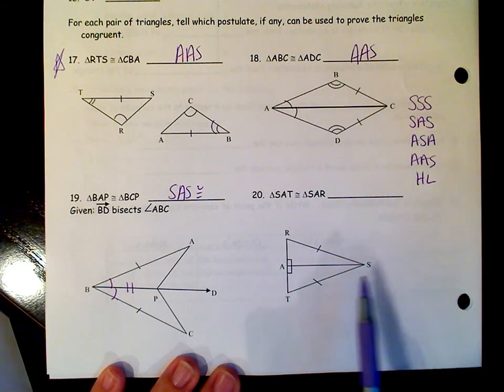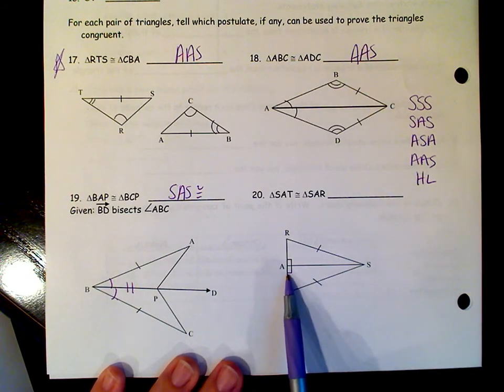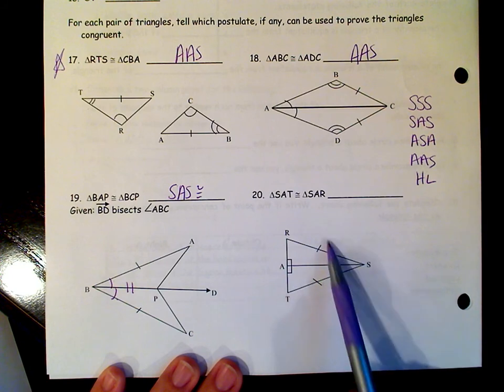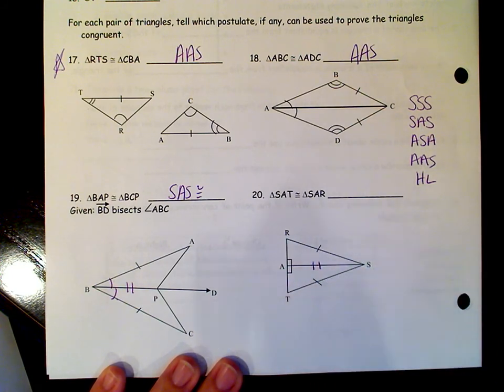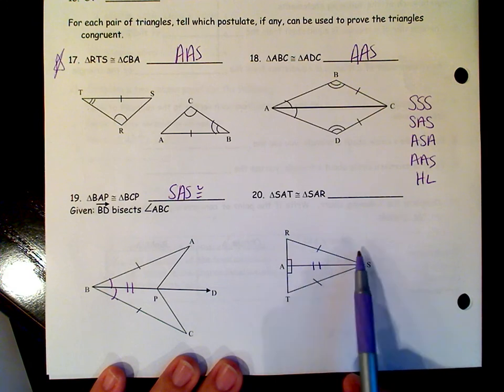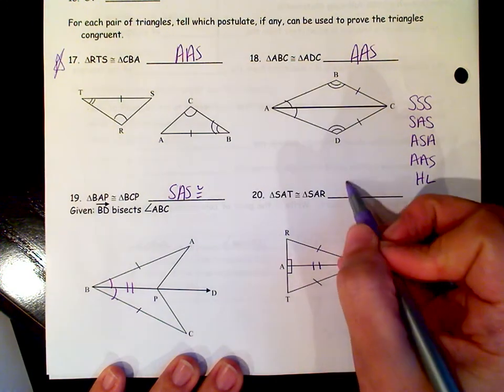On 20, we notice that it's a right triangle. The hypotenuse are marked congruent and they share a leg. Therefore, these two right triangles are congruent by HL.